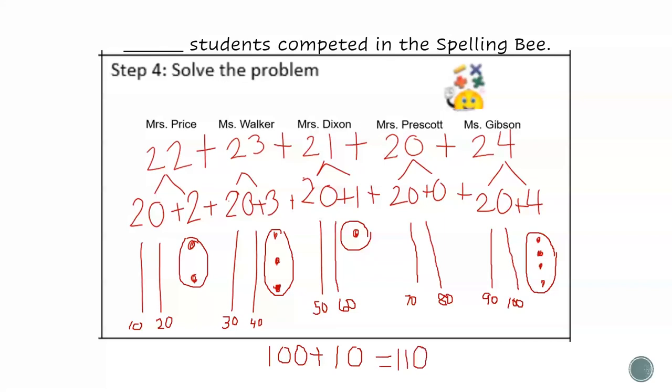So 100 plus 10 equals 110. So that means that between all five classes, 110 first graders competed in the spelling bee.